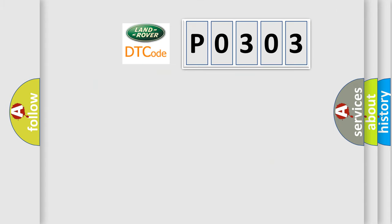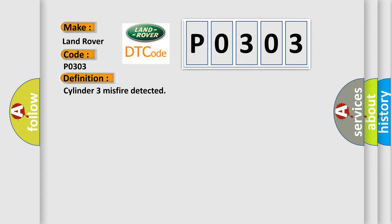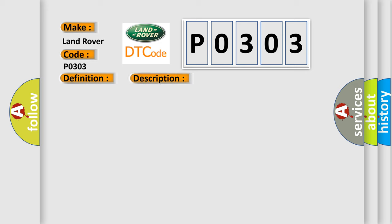So, what does the Diagnostic Trouble Code P0303 interpret specifically for Land Rover and other car manufacturers? The basic definition is: Cylinder 3 misfire detected. Here is a short description of this DTC code: excess emissions level of misfire detected on cylinder number 3.